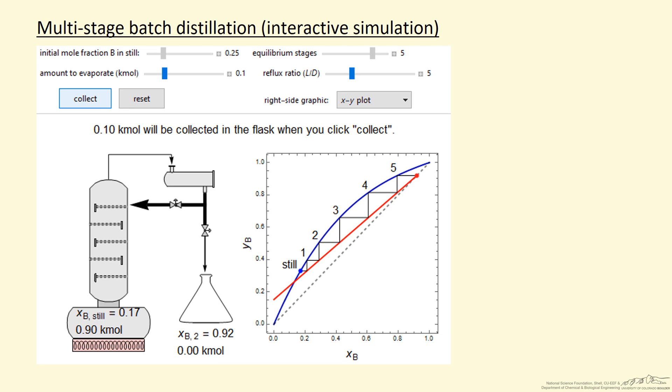Steady state is obtained by having complete reflux, total reflux, and then when we hit collect, we collect in this flask.